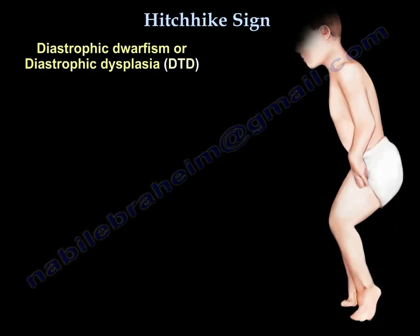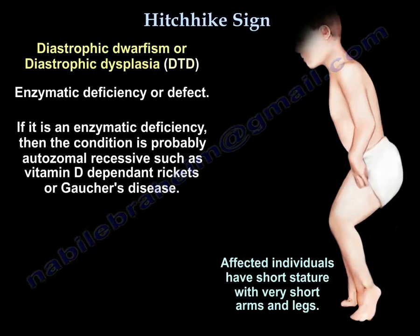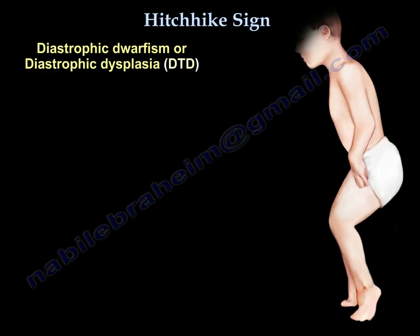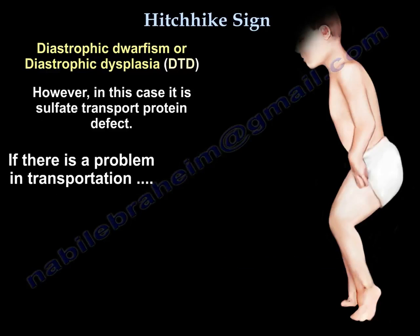The second condition is diastrophic dwarfism, which involves an enzymatic deficiency or defect. If it is an enzymatic condition, it is probably autosomal recessive, such as vitamin D-dependent rickets or Gaucher disease. In this case, the defect is a sulfate transport protein defect.